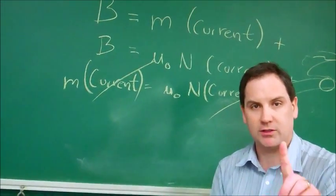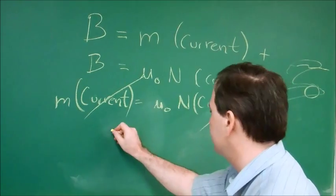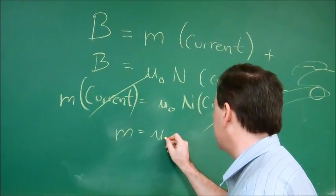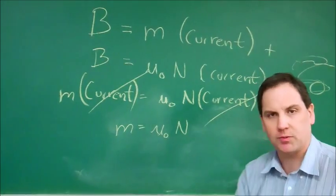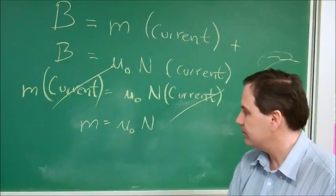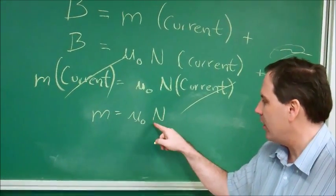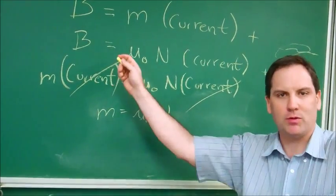And we get that m is equal to mu zero times N. This is for the first part, where we're changing the currents. Because in this case, N, the number of turns per meter, is a constant. We know m, we know N, solve for mu zero.